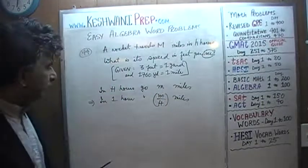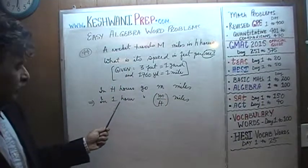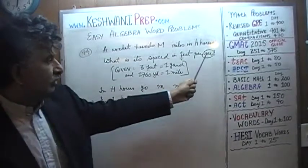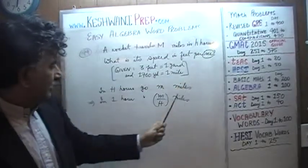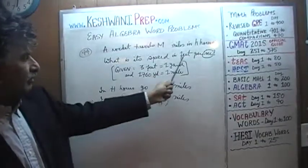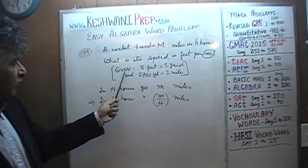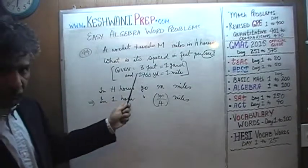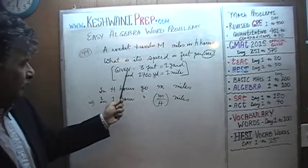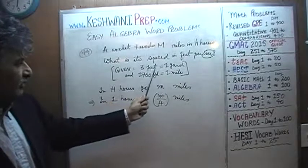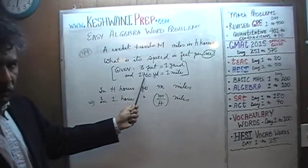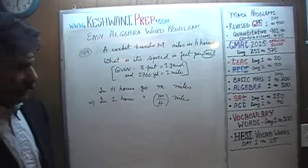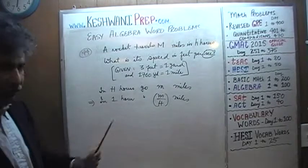That's it — we're done with the rate part. All we have to do now is convert our units: hours into seconds and miles into feet. This information will be given to us in the exam. We know that three feet make a yard and it takes 1760 yards to make a mile.